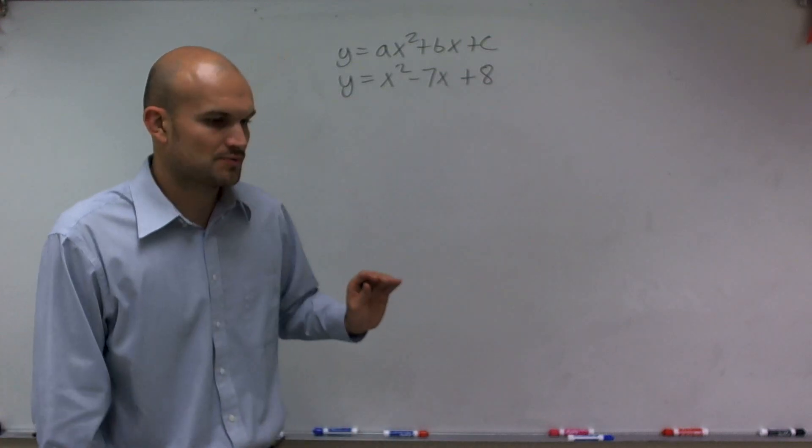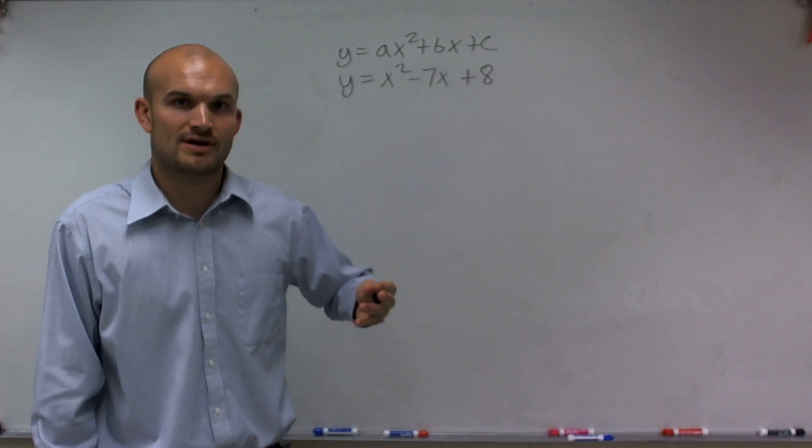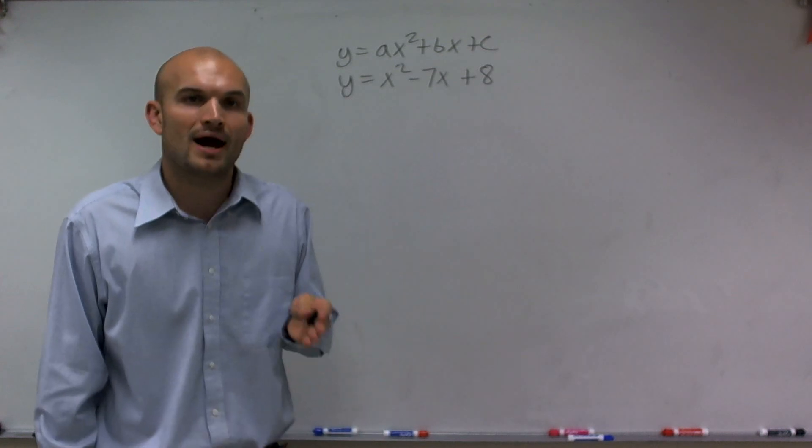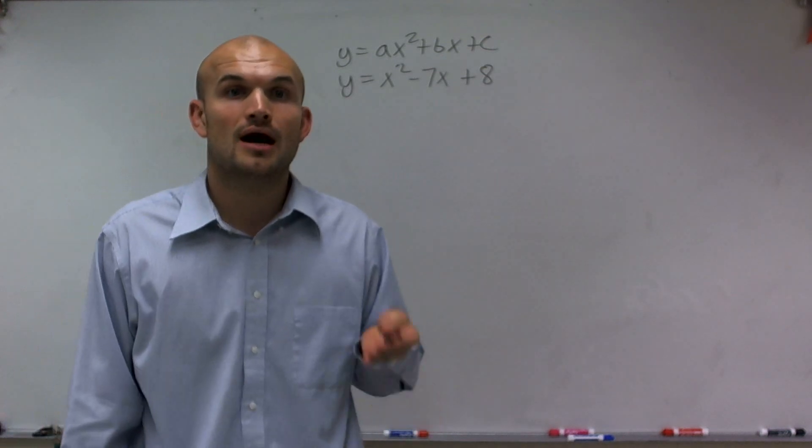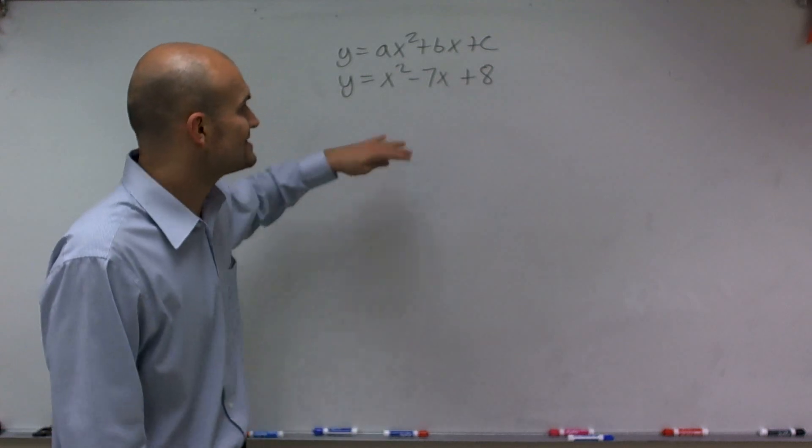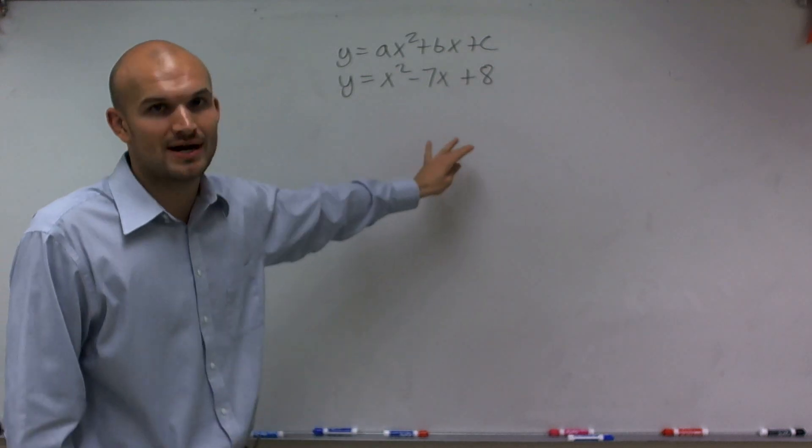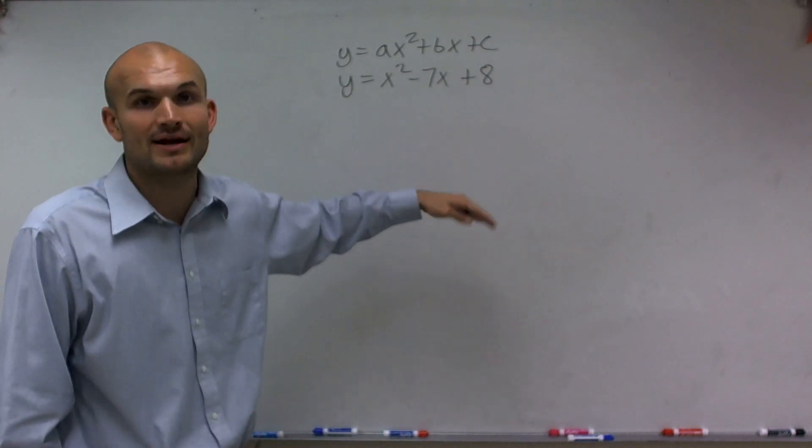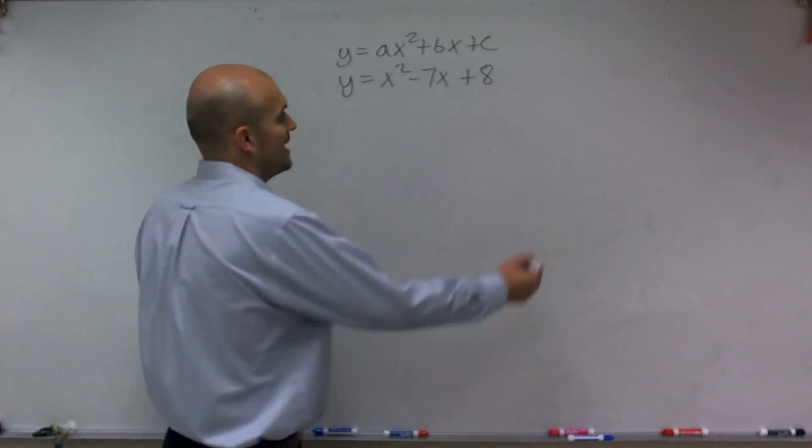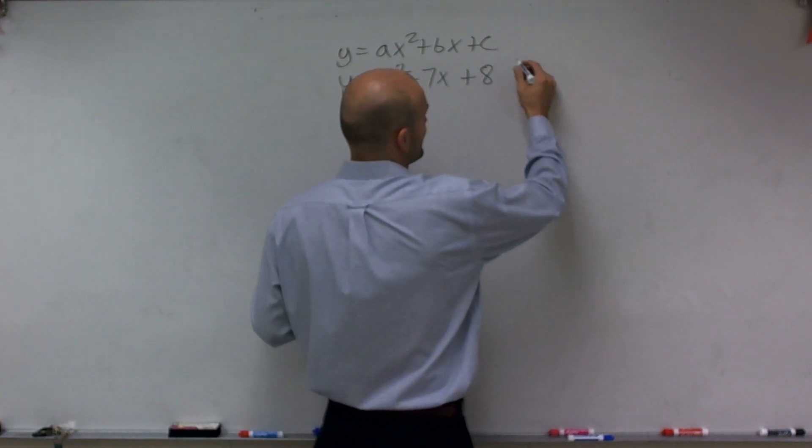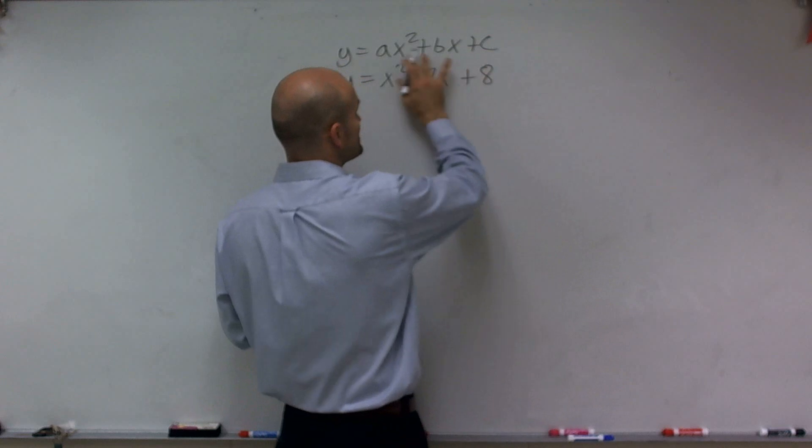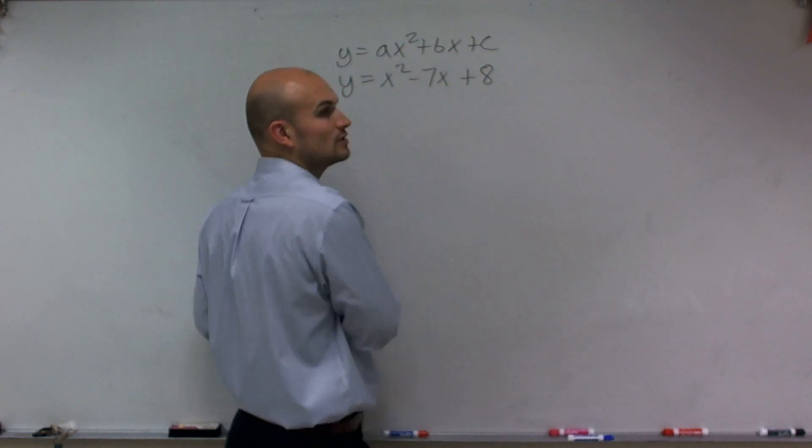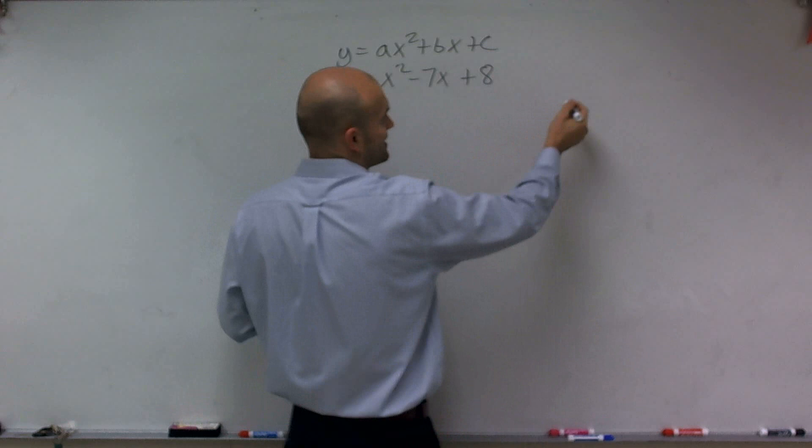So what we need to do is one thing we noticed about our quadratic is it had that axis of symmetry. Y equals x squared was symmetrical about the y-axis. And that's the same thing with all quadratics. They're all symmetrical about an axis of symmetry. And that axis of symmetry, it has a certain formula. And that's why we use this definition of a quadratic equation to be able to write that.